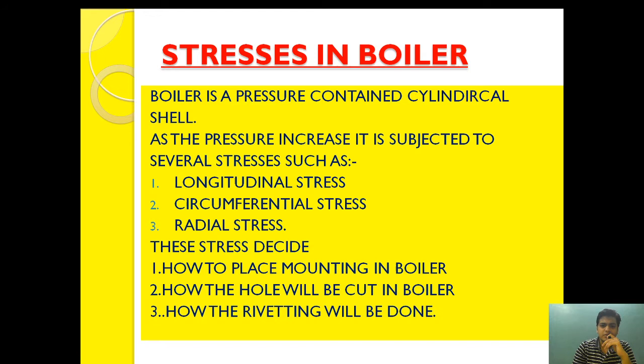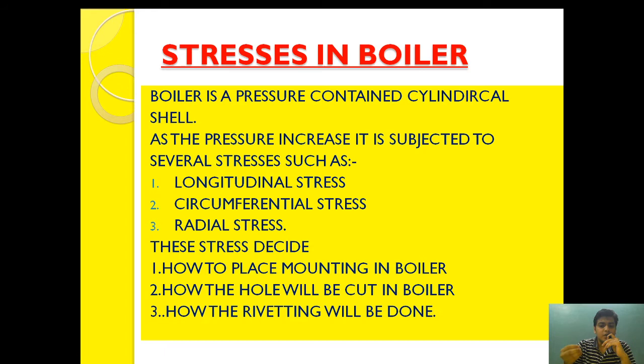These three stresses decide how holes will be cut in the boiler. We require several holes to be cut in a boiler cylindrical vessel to ensure several mountings can be installed, such as the feed water valve, safety valve, steam stop valve — many mountings and holes need to be cut so that they can be installed in a boiler. Also, how the riveting needs to be done, to ensure that the part subjected to higher stress can be additionally riveted so that it may have good structural strength. So all of this is dependent on these three stresses: longitudinal, circumferential, and radial.